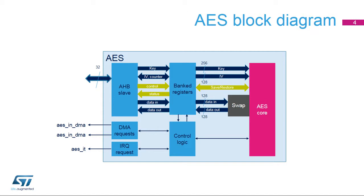The AES block is an AHB slave. Either the CPU passes the data, key, and initialization vector to the AES block by writing to memory-mapped registers and gets the result by reading registers, or data movement can be ensured by two DMA channels — one for writing data to the AES, the second to read the result. Software can suspend a message if the AES needs to process another message with a higher priority, then resume the original message.